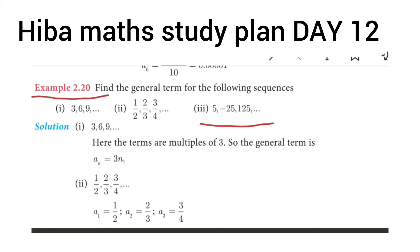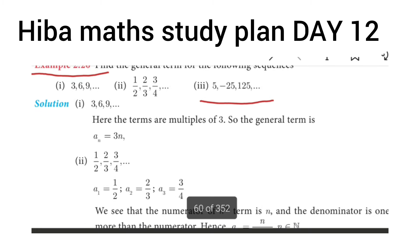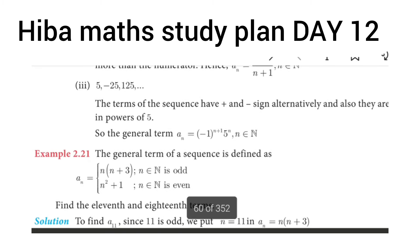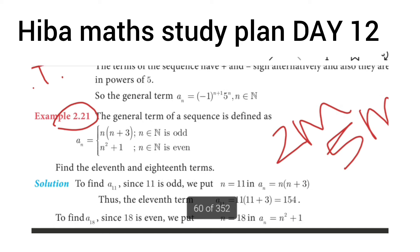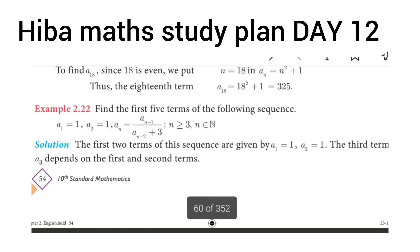For example, 3 into 3, 6, 9. The next example is 2.21. We can complete the number of terms. This exercise is very important.